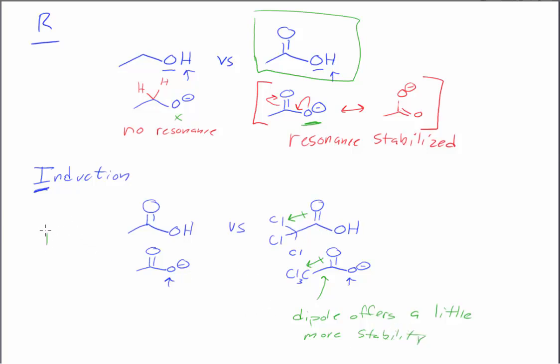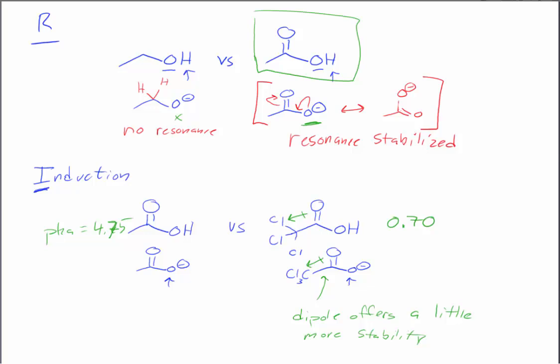This dipole offers a little more stability. We can see that if we look up the pKa's of these two compounds, acetic acid is 4.75 and trichloroacetic acid is 0.70. So about four orders of magnitude more acidic because of the presence of those three chlorines. We could temper that acidity by removing a chlorine, and we'd get a pKa somewhere in between. Here we see the effect of induction, where there's an electronegative element pulling electron density towards itself.